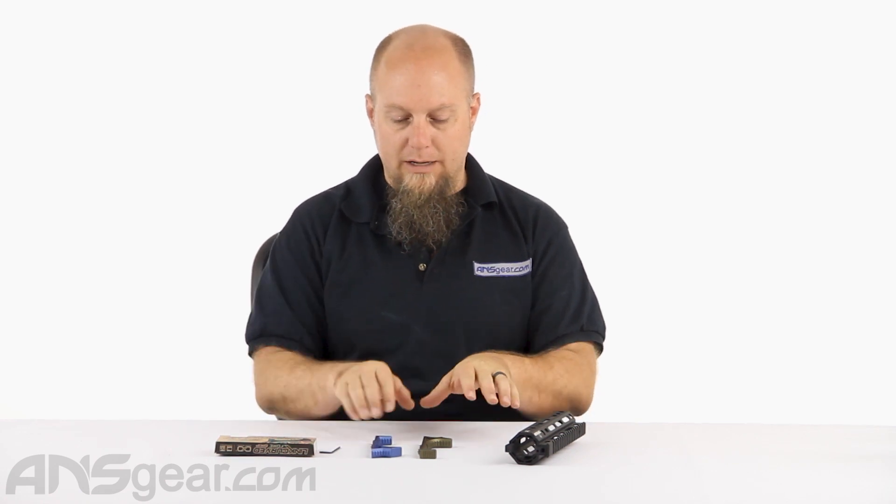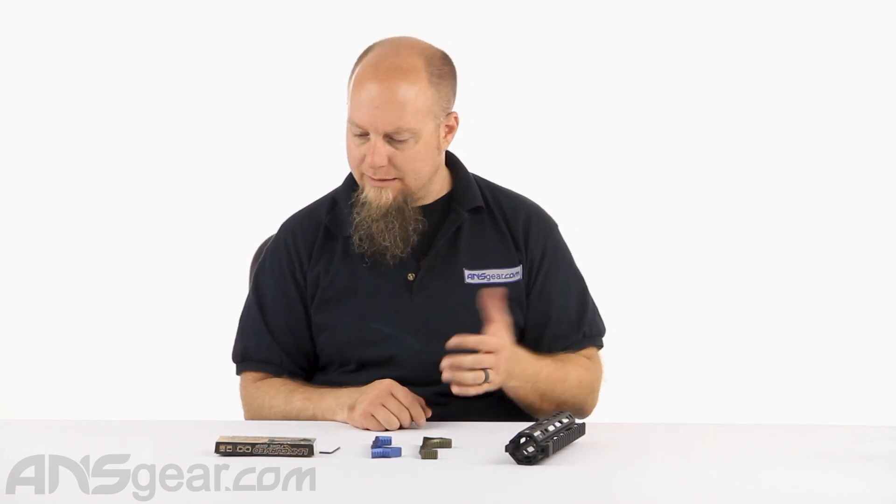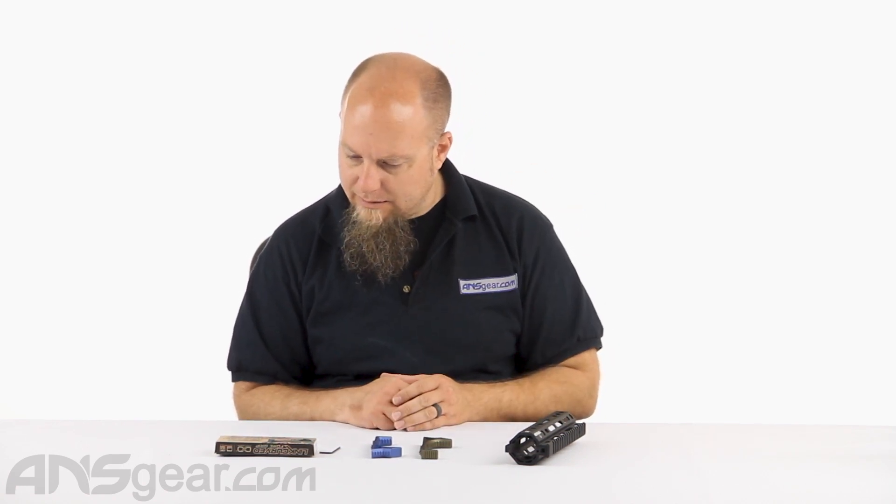This is the Strike Industries Linked Curved Foregrip. We've got the Blue Line and the FDE Line right here. These foregrips are made of aluminum. I think they're 60-61 T6 aluminum, so they are extremely durable. They're not composite, they're not plastic, they are made out of aluminum.